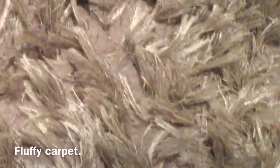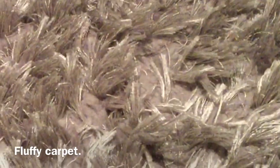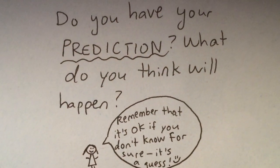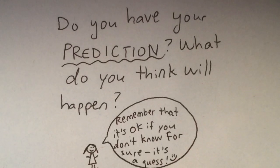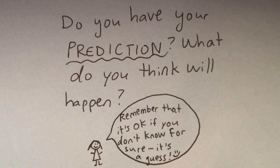A textured oven mitt, a fluffy carpet, and a smooth table. Do you have your prediction? What do you think will happen? And remember, it's okay if you don't know for sure – it's a guess!